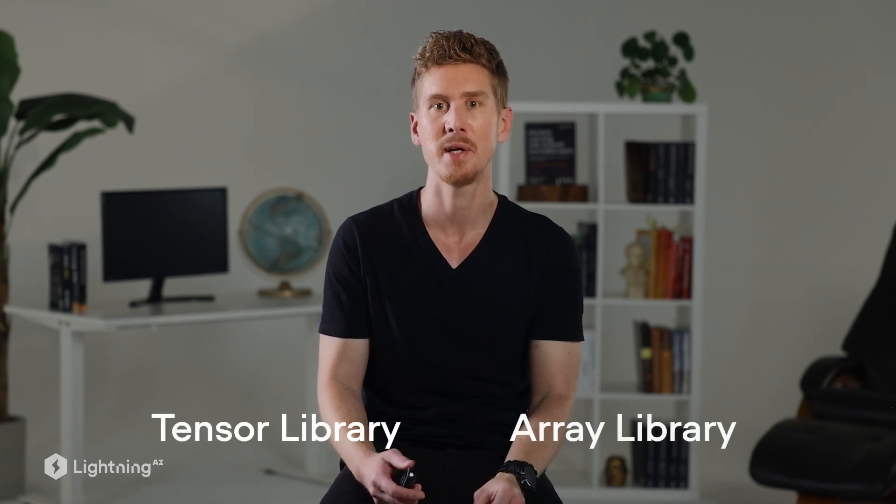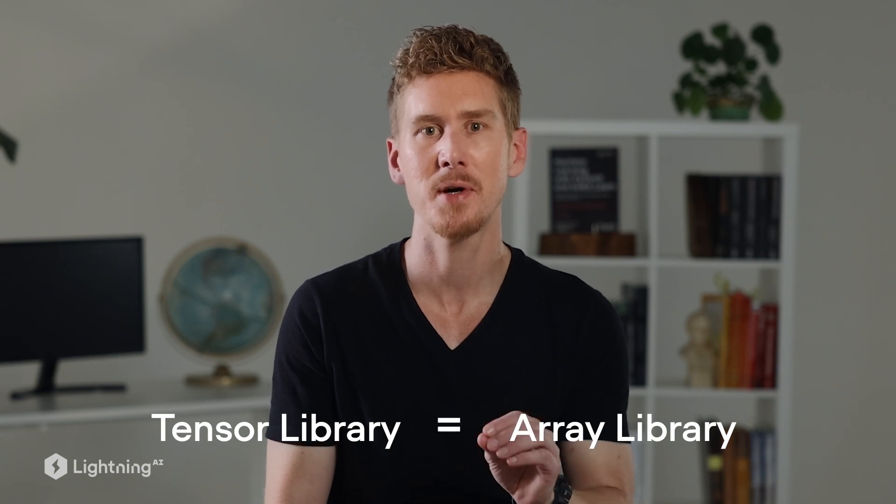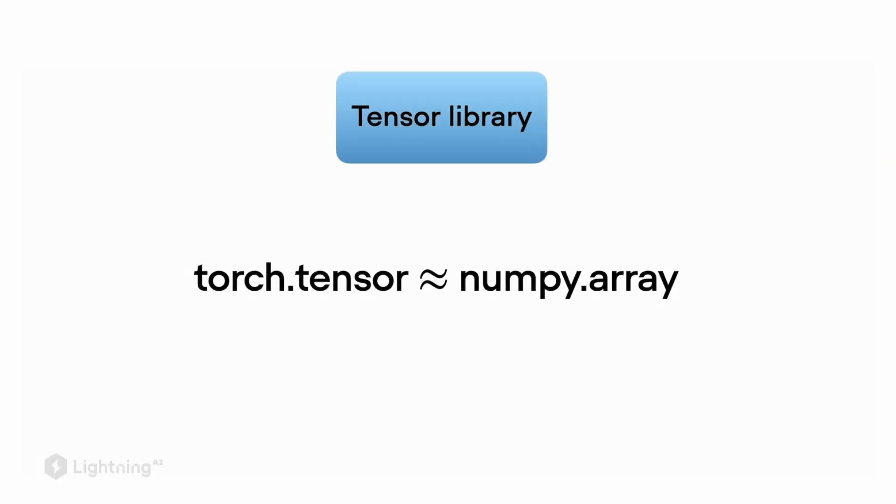In the previous video, I promised to discuss the difference between a tensor library and an array library. It may sound a bit boring, but they are actually the same thing. And torch.tensor is almost identical to numpy.array.